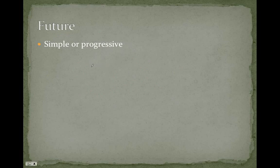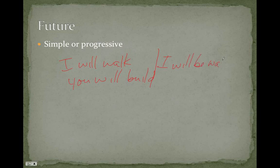The future tense, as you might guess, is yet to happen, it's not taking place yet, it will take place in the future, and it, like the present, can be either simple or progressive. So, I can say, I will walk, or you will build, or we can use the progressive, I will be walking, or you will be walking.